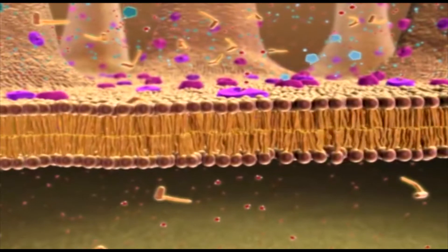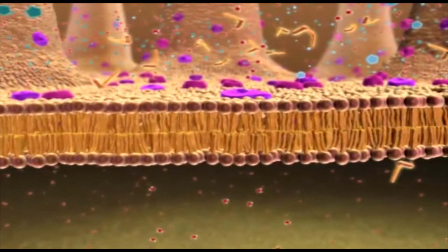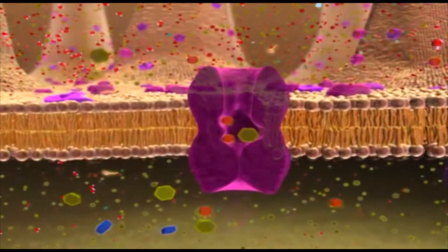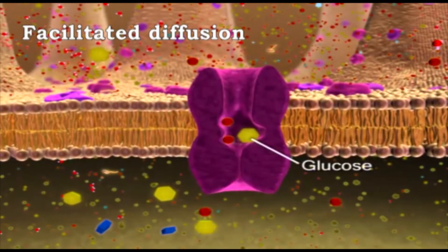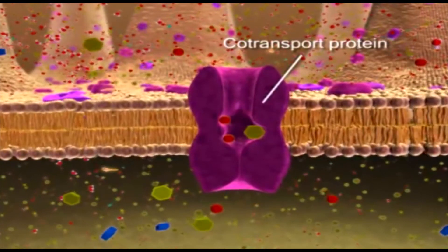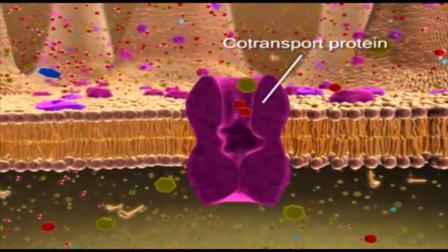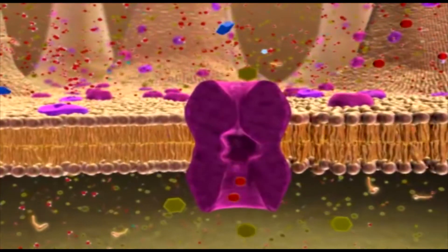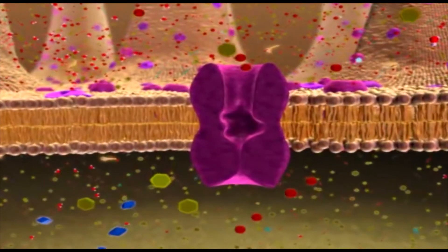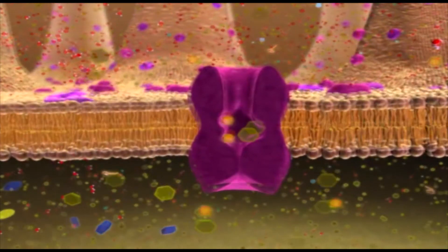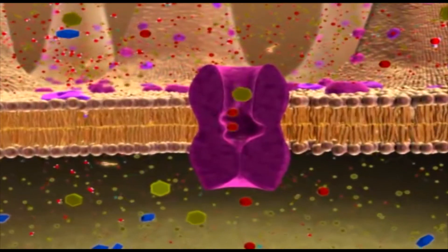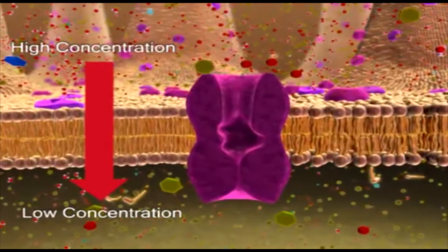Unlike carbon dioxide, large molecules such as glucose cannot pass through the cell membrane by simple diffusion. Glucose can pass through the cell membrane by facilitated diffusion. Facilitated diffusion is a passive transport in which carrier protein molecules are involved to transport molecules across the cell membrane without using the cell's energy. The energy is obtained from concentration gradients — that means molecules are transported from a region of high concentration to a region of low concentration.